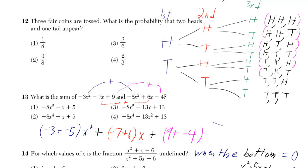And they want to know what's the probability that two heads and one tail will appear. But it doesn't say it has to be in that order. So you look for anything here that has two heads and one tail. Well, that's that one right there. That one right there. And that one right there. And that's three out of the eight.